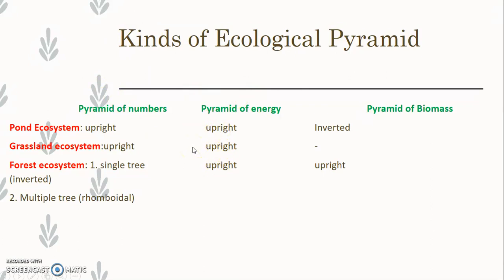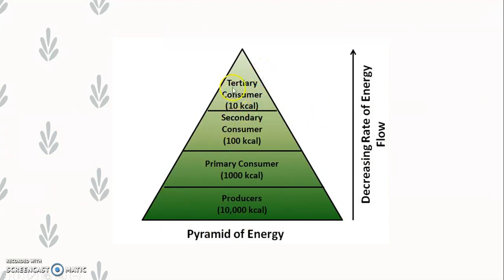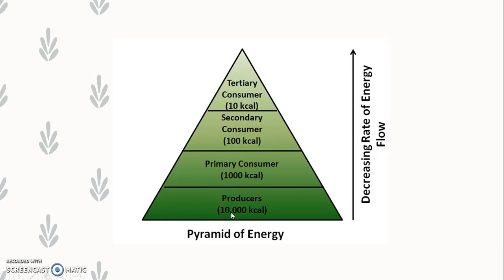Pyramid of energy is the best representation in any ecological pyramid — it is always upright and never inverted. In this graphical representation, the producers or autotrophs have 10,000 kilocalories. 10% energy transfers from one trophic level to the next, so 10,000 becomes 1,000, then 100, then 10. At the top of the pyramid, the highest trophic level receives very little energy — only 10 kilocalories. Energy content decreases as we move from bottom to top.